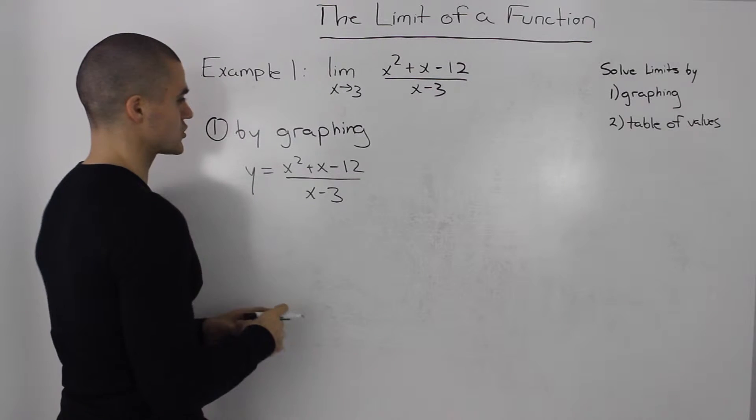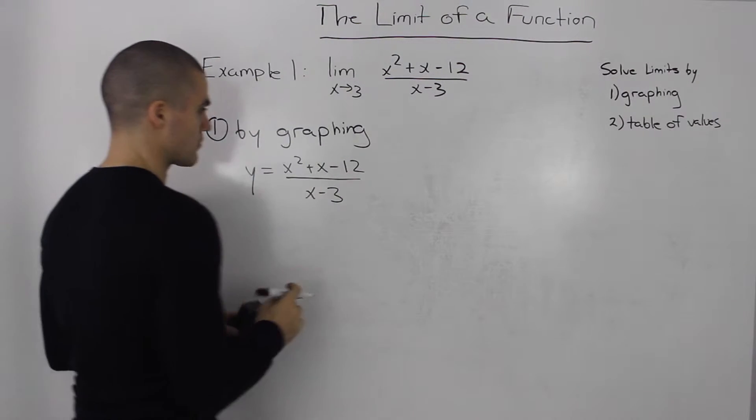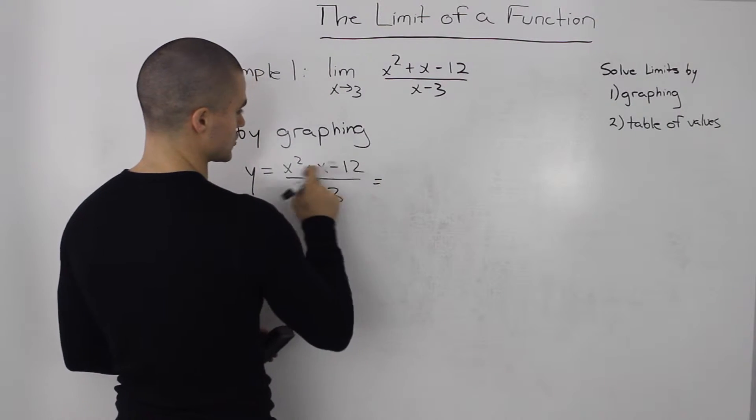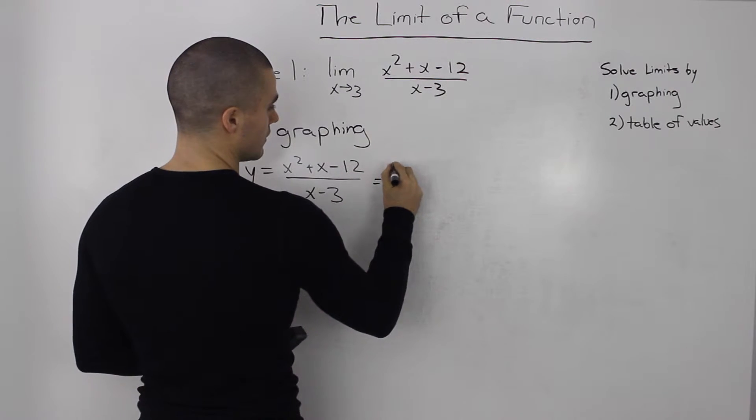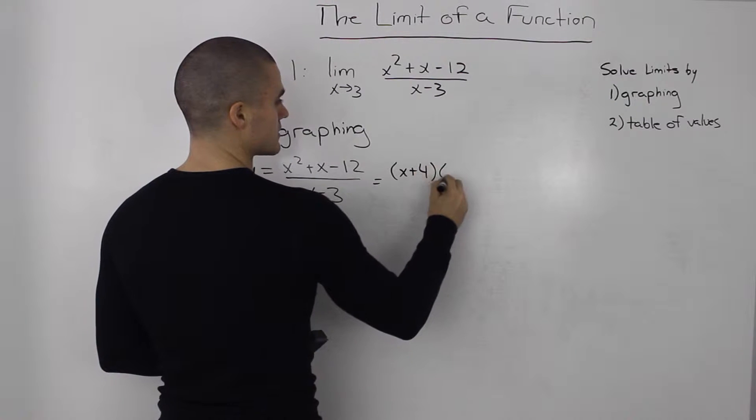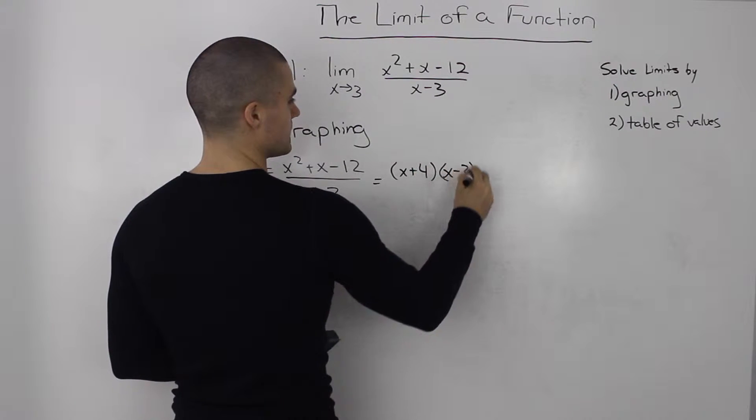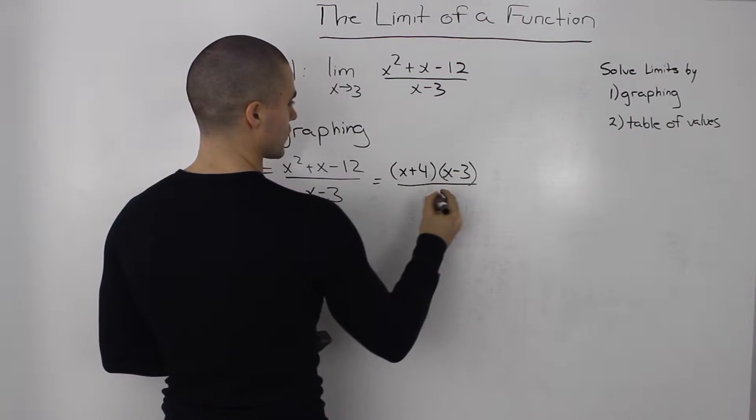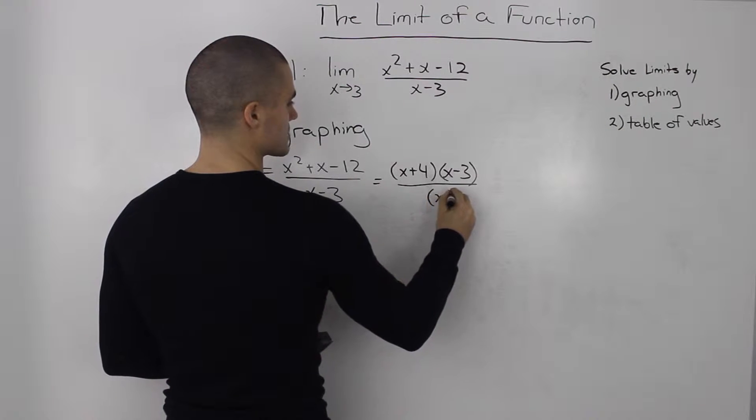This is a rational function. If you remember from advanced functions, we can factor the numerator. That will equal x plus four times x minus three over x minus three.